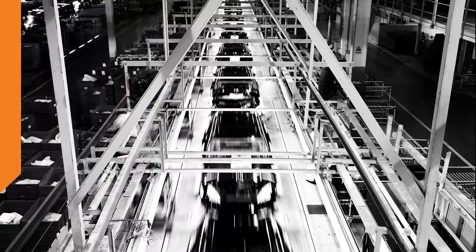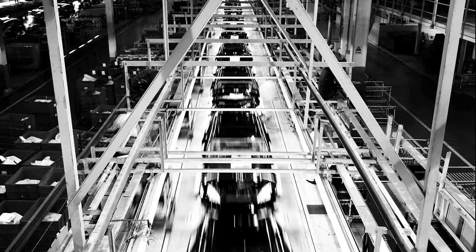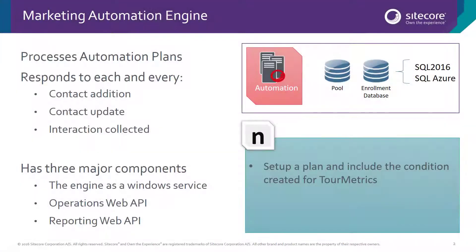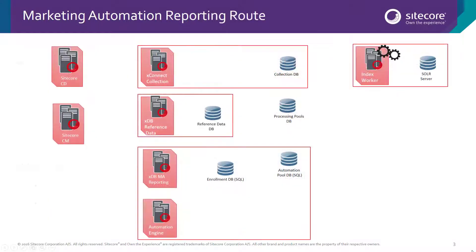The Marketing Automation Engine, when we looked at that in the old platform, we found it ran on the CMS server and also ran on the CD server watching what happened on the website. We found that would not scale when it comes to an omni-channel system, because you have to support interactions coming in and being collected from the content delivery environment, but also interactions coming in from some CRM system.